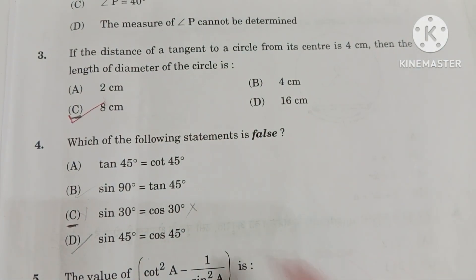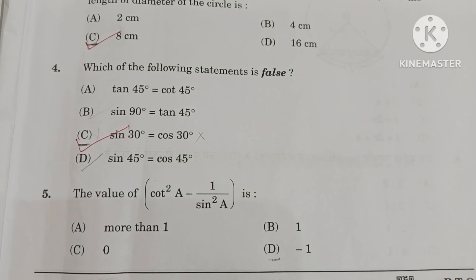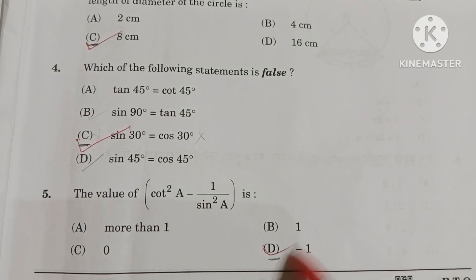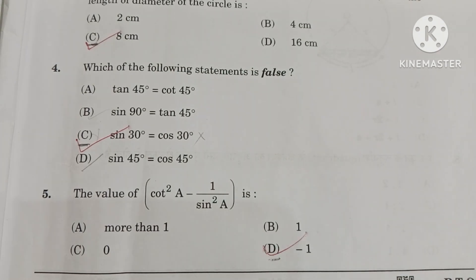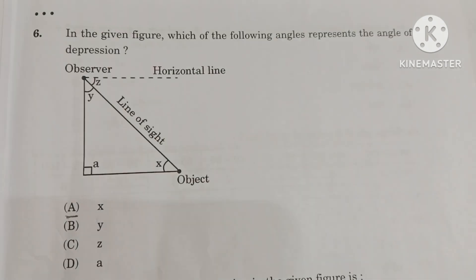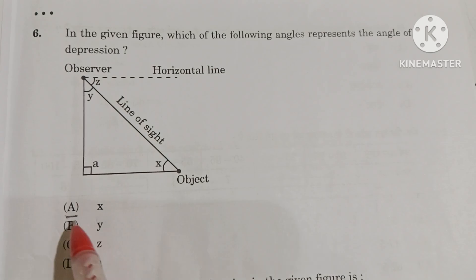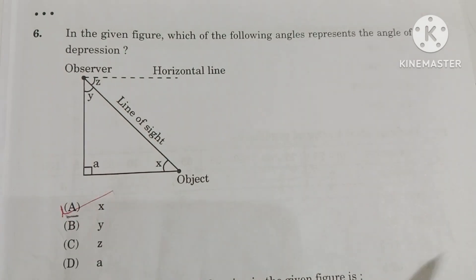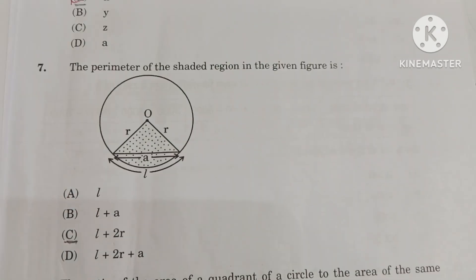Q4. C option is the correct option. Q5. In this question, D option is the correct option. Q6. In this question, A option is the correct option.